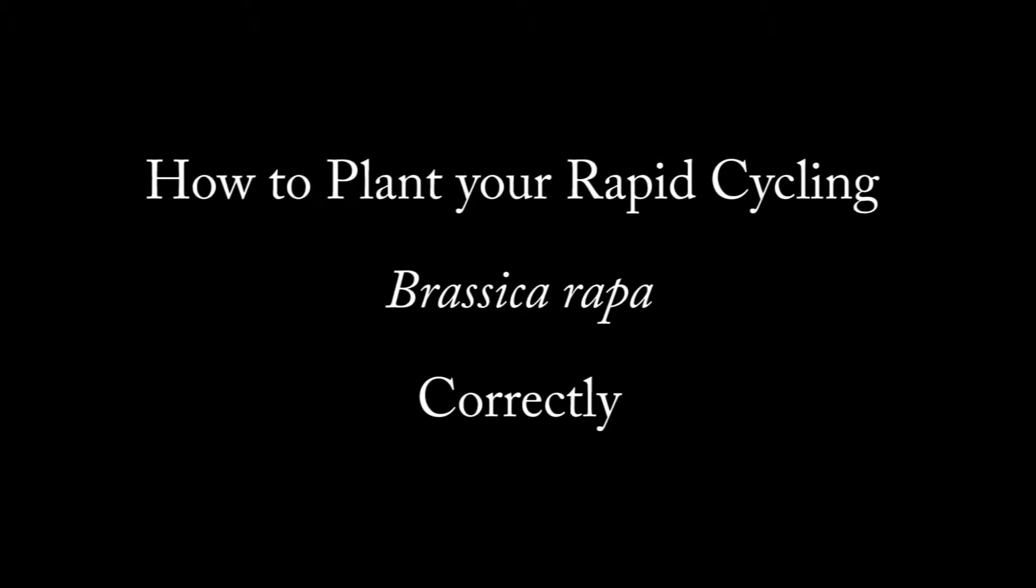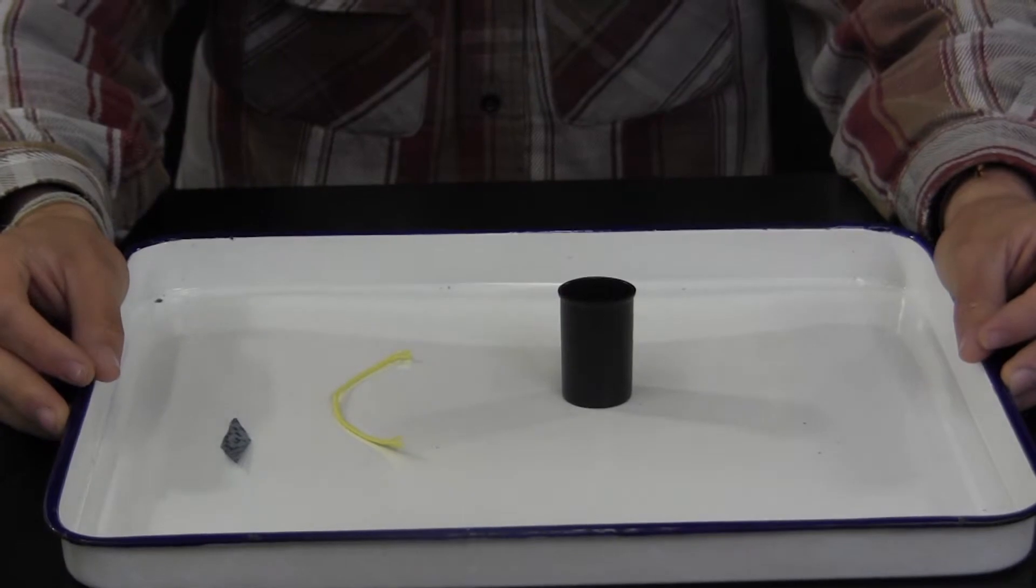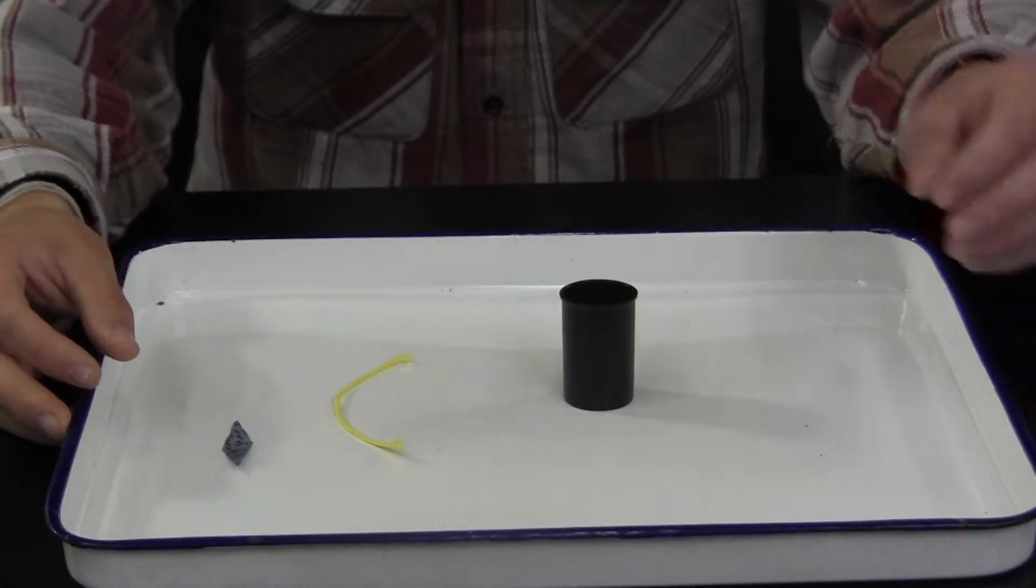How to plant your Rapid Cycling Brassica Rapa correctly. First obtain a canister and a wick. The type of wick does not matter.